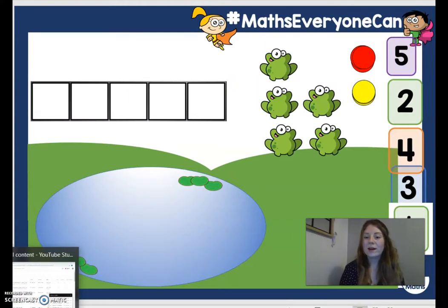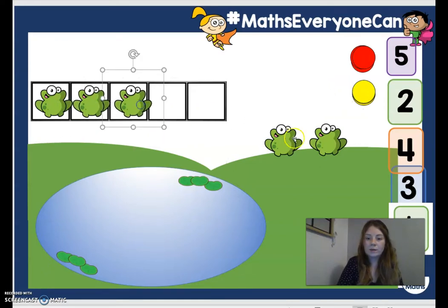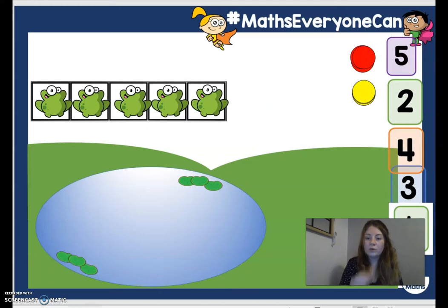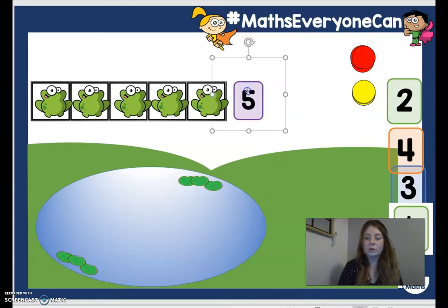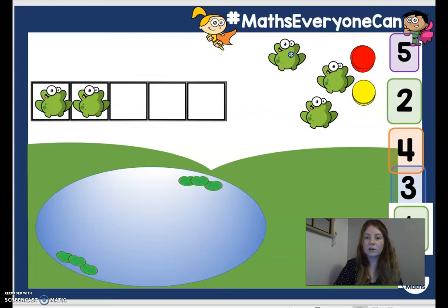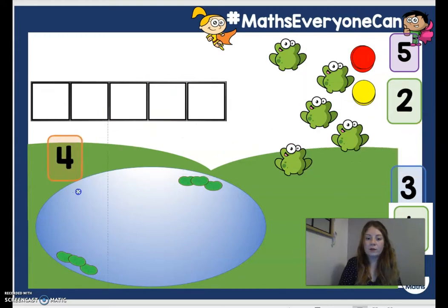Now we're going to start our work on number bonds. I've got a little pond here and in a moment we're going to put some frogs into our pond. Let's begin by finding out how many frogs we have: one, two, three, four, five. We've got five frogs in total. I'm going to put the number five there. Now we're going to put some frogs into the pond — I'll put them all back at the very start, and I'm going to begin by putting four frogs into the pond.